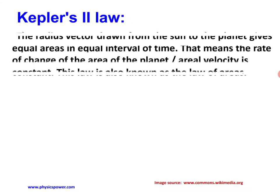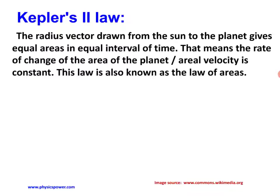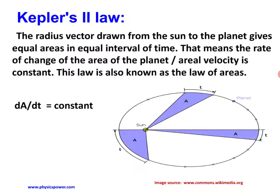According to Kepler's second law, the rate of change of area is constant. The radius vector drawn from the sun to the planet sweeps equal areas in equal intervals of time.